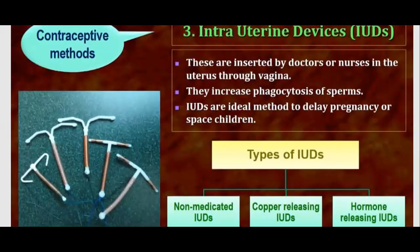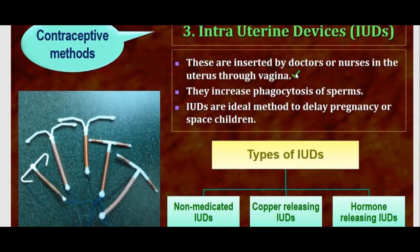We are going to start with the IUDs. The full form of IUDs is intrauterine devices. These are devices which are inserted by doctors or nurses into the uterus through the vagina. The uterus is where a baby stays during pregnancy and takes nutrition from the mother's body. Intra means inside the uterus.